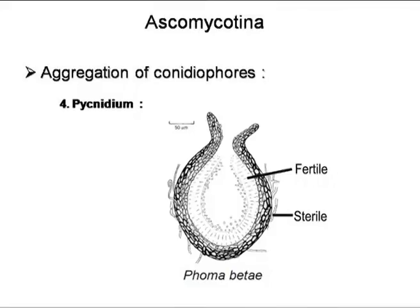The next type of fructification is the pycnidium, which is basically a flask-shaped structure of which the covering is produced by the hyphal mat. Inside the flask-shaped cavity, the conidiogenous cells are present, from which conidia are developed.